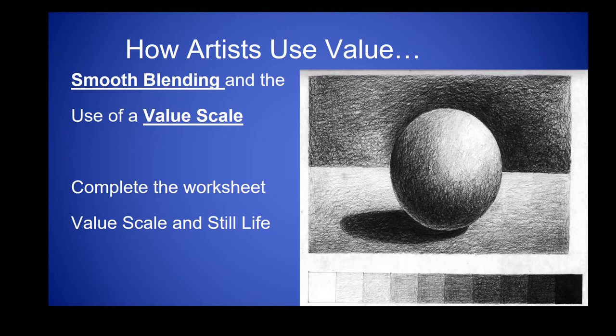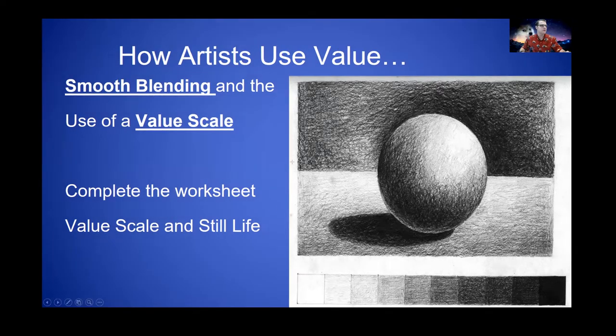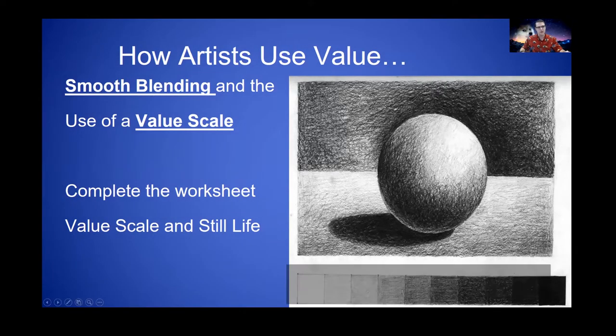A value scale is something that we make or create so that we can see the range of values that our tool can make. Down here at the bottom is this value scale. This shows how dark a pencil can get and how light your pencil can get and everything in between. That's that contrast we were talking about. There's nice contrast between these first few values and these last few values, but not really in the middle. These are all called our mid-tone or mid-range values.